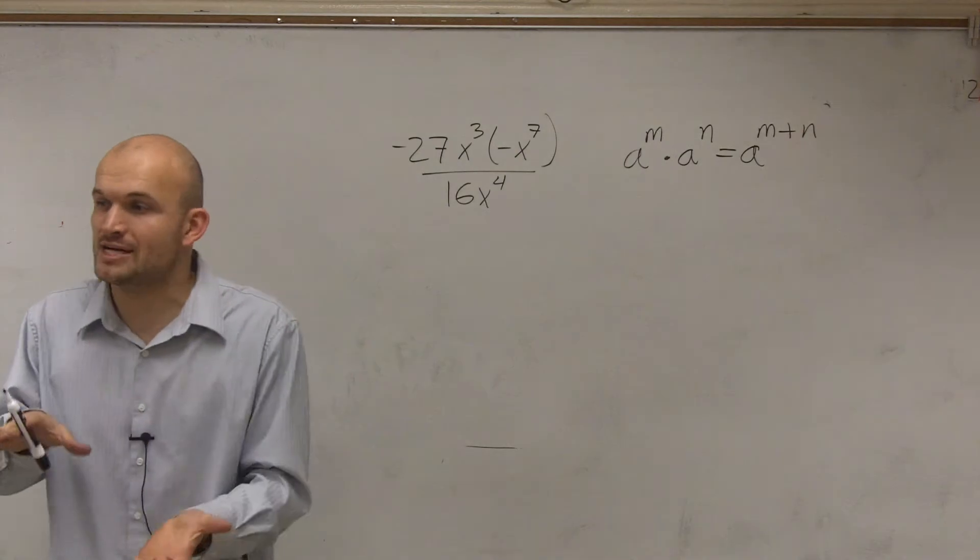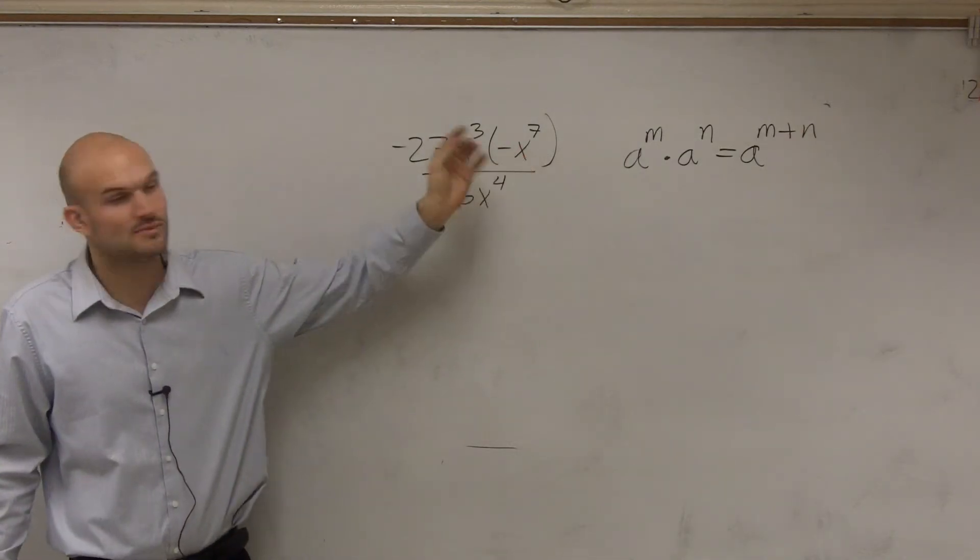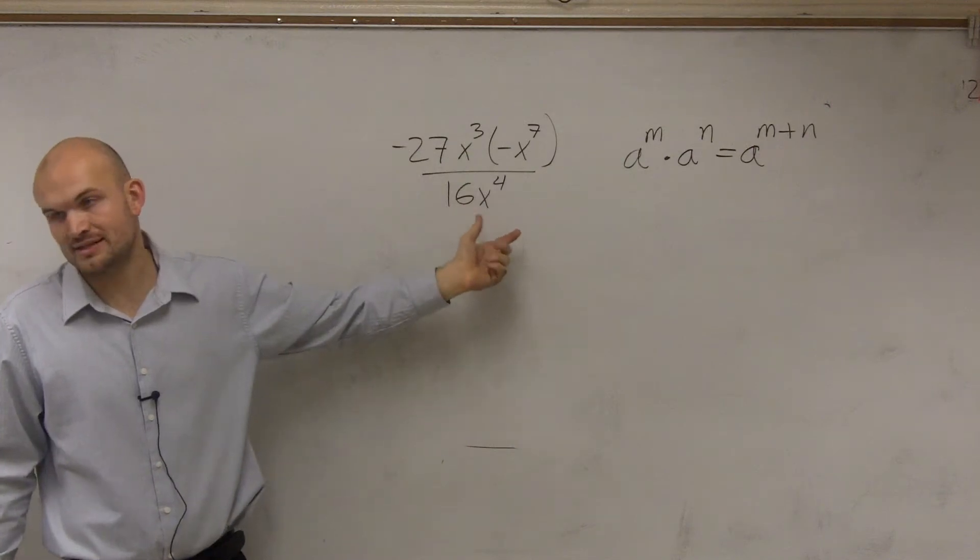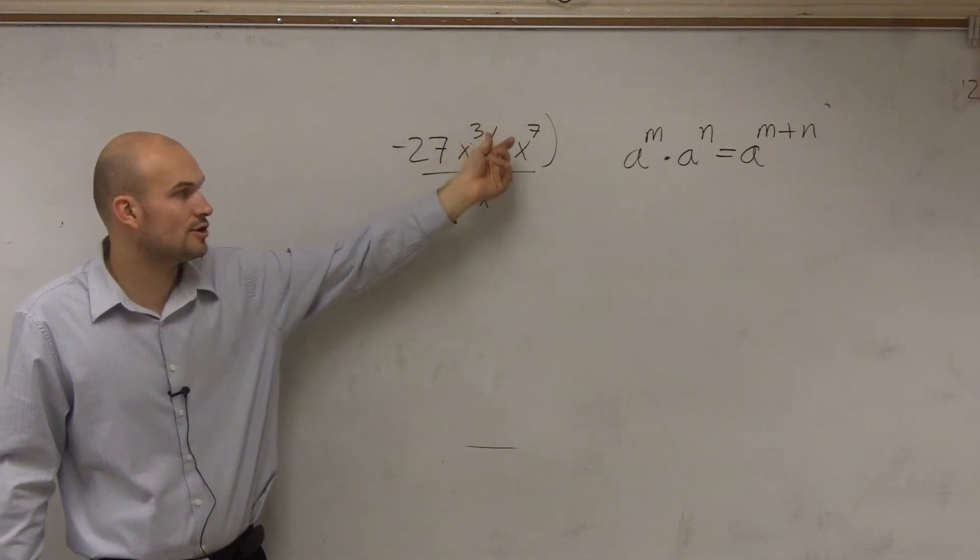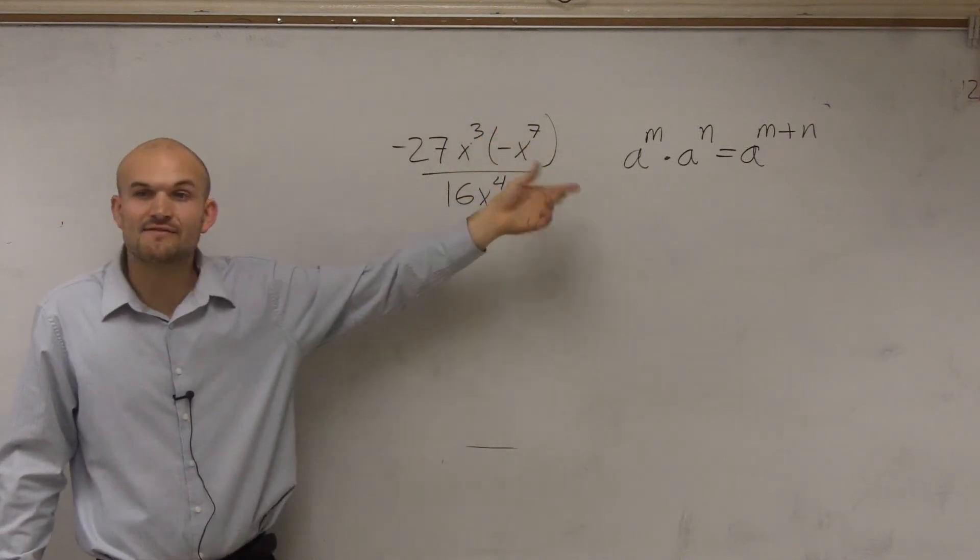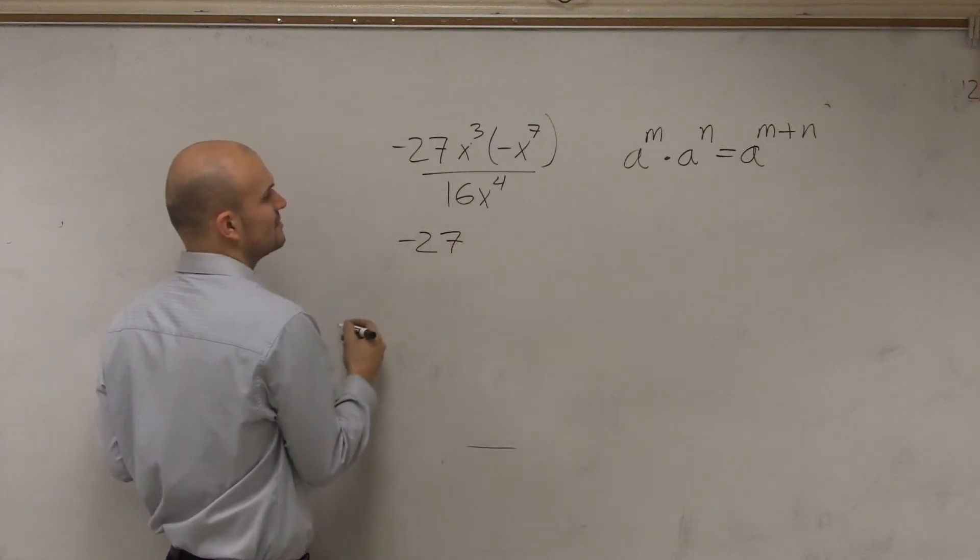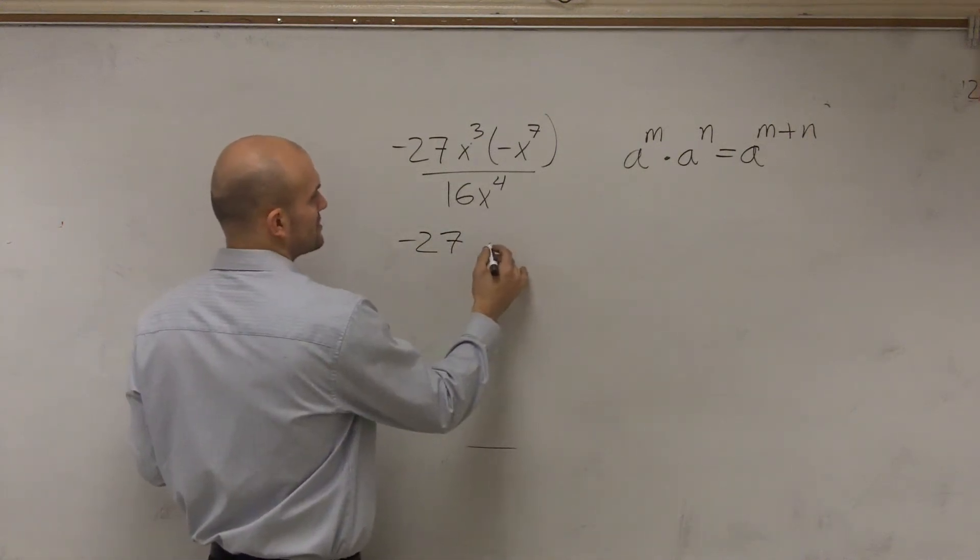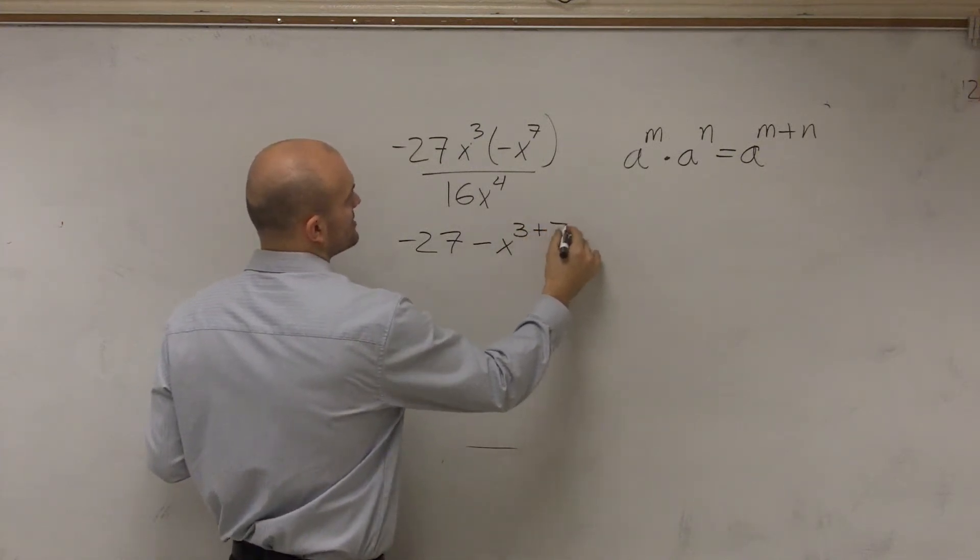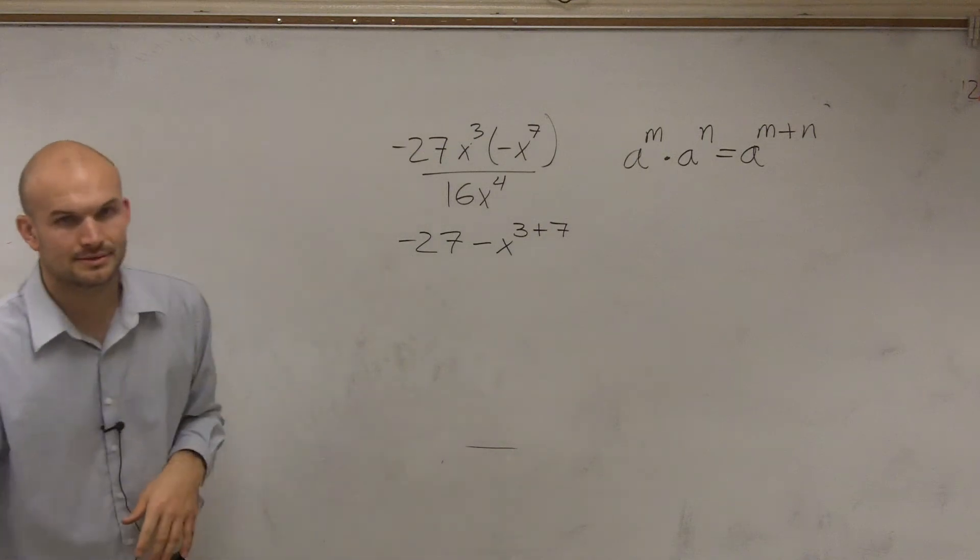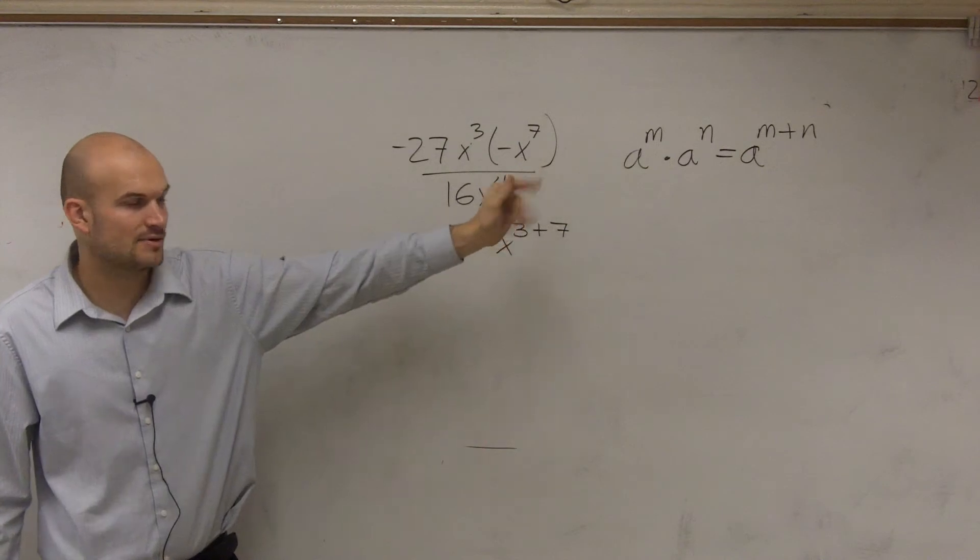OK, so what I'm simply going to do is when I'm dealing with rational expressions, I'm going to want to simplify my numerator as much as possible and then simplify the denominator. Well, the denominator is already simplified, but I notice I can multiply x to the third power times negative x to the seventh because they have the same base. So that's going to produce negative 27, so it's going to be negative x to the three plus seven. Because an x times a negative x is negative x, and then you add the exponents.